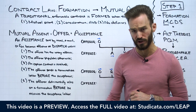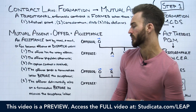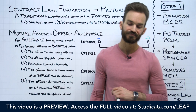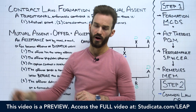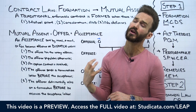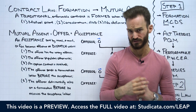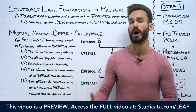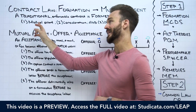Our fifth and final exception: the offeror detrimentally relies on a termination letter before receiving the acceptance letter. In this scenario, the offeree sends the acceptance letter first, then sends a termination letter. The offeror receives the termination letter first and detrimentally relies on it before receiving the acceptance letter. In that case, the acceptance becomes valid upon receipt — and if the offeror received the termination letter first, we do not have offer and acceptance, so no mutual assent.